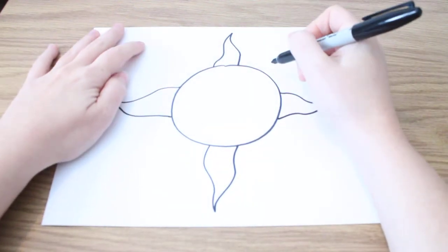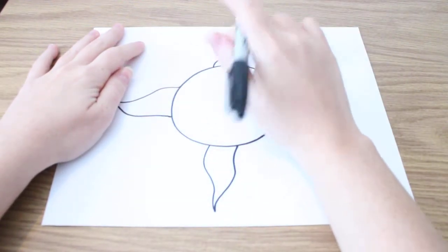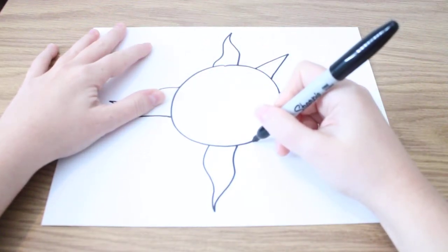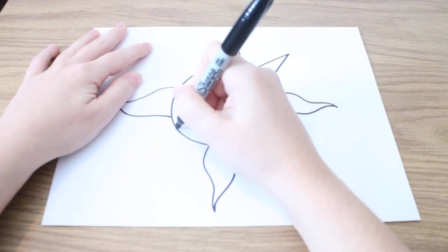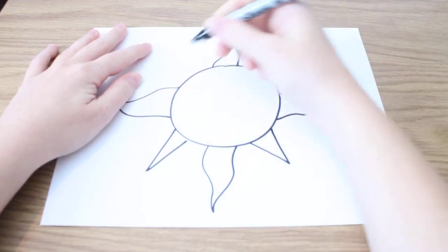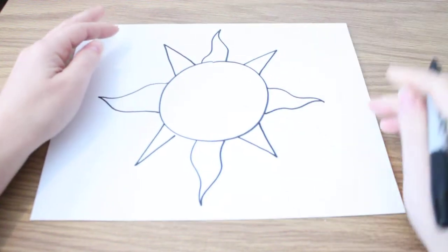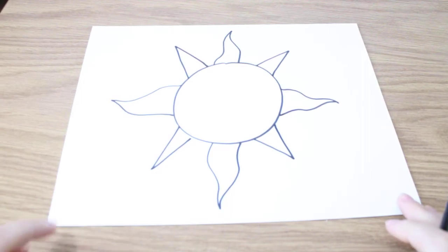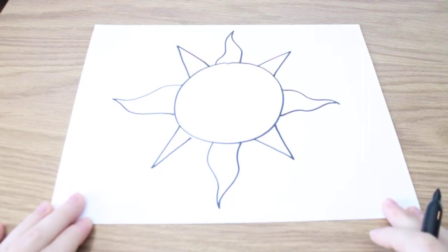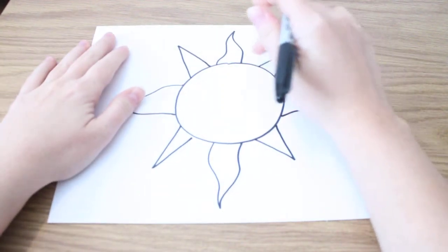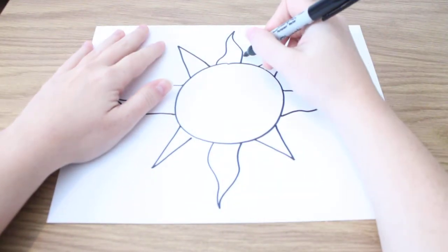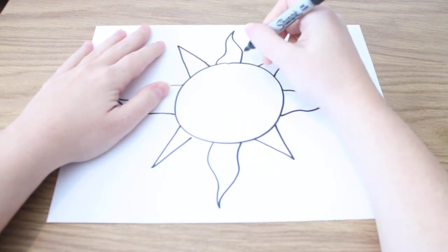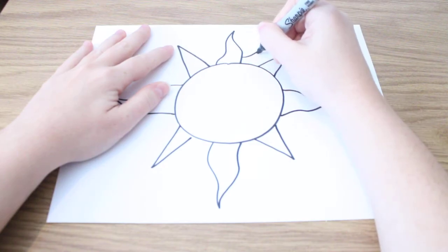Okay, and then in between each of these we're going to put a pointy one. And then once again in between all of them we're going to put a little pointy ray that is kind of curved. So we go curve up, curve out.